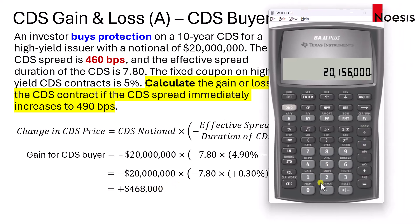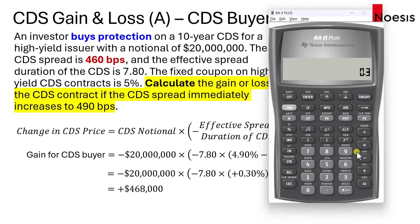To do a quick check: $20,000,000 multiplied by 7.8 multiplied by 0.3 divided by 100 gives $468,000. This formula can only be used if it is an immediate change in the CDS spread.